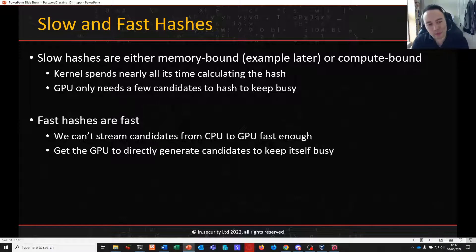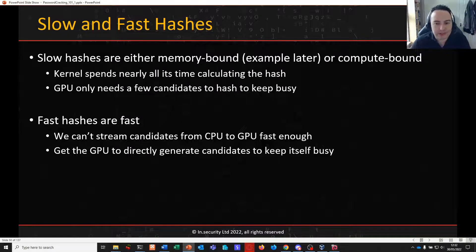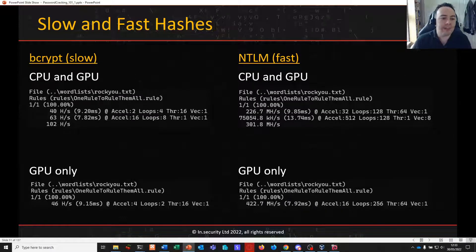We've talked about fast and slow hashes in previous videos — bcrypt from Linux is painfully slow, while Windows NTLM hashes are super fast. Slow hashes are generally memory or compute bound. Because of the time slow hashes take, the GPU doesn't need many candidates to keep busy. But fast hashes are so fast we can't get candidates from the CPU to the GPU quickly enough, so we get the GPU to generate candidates directly.